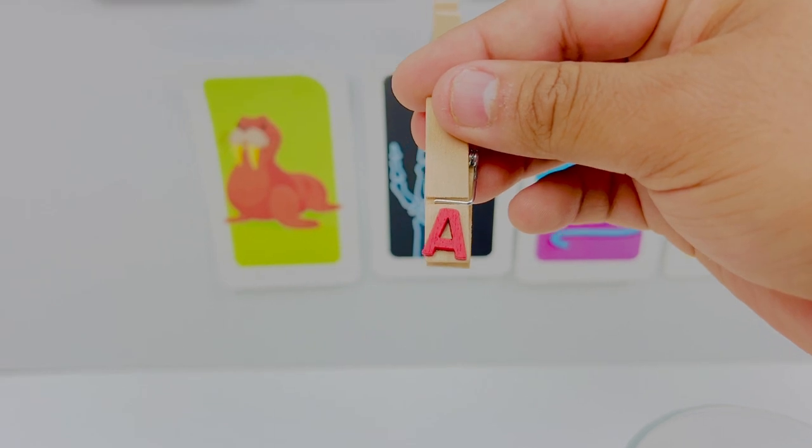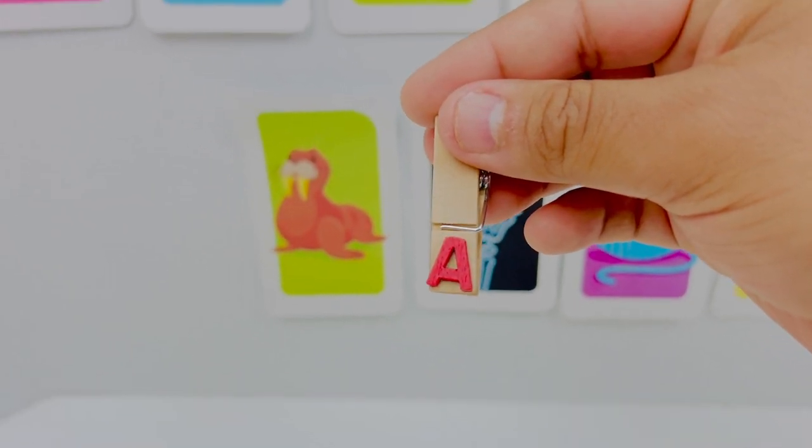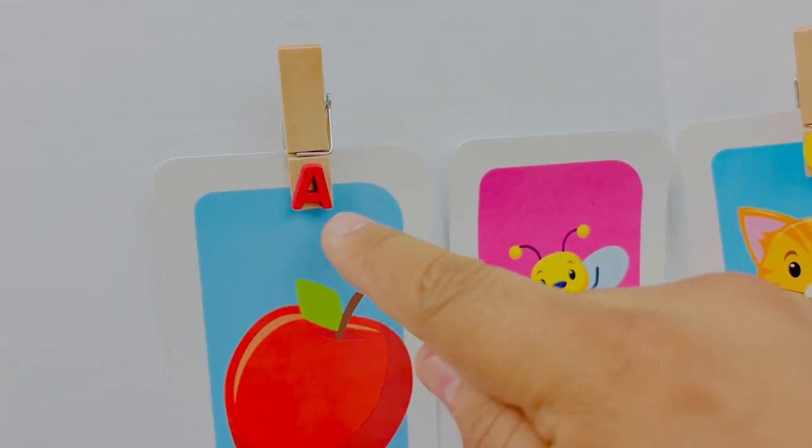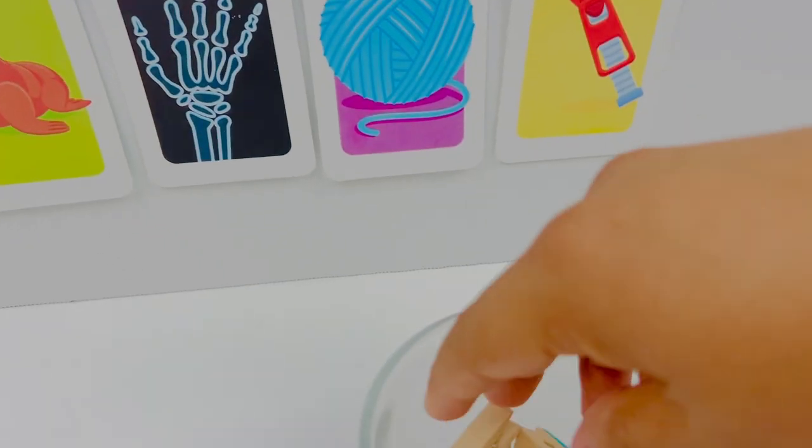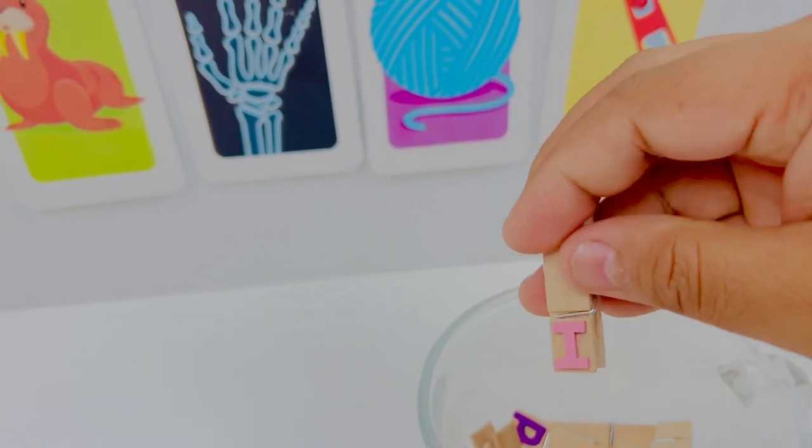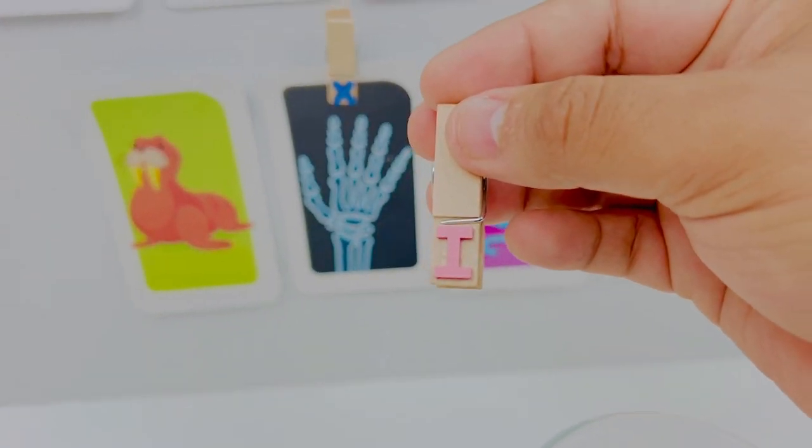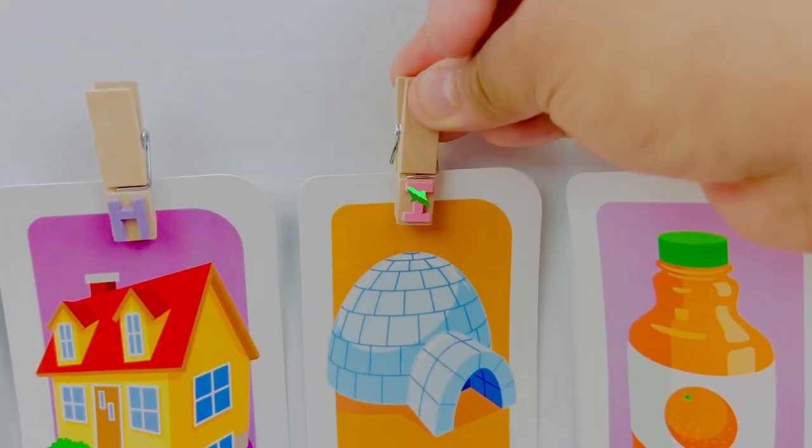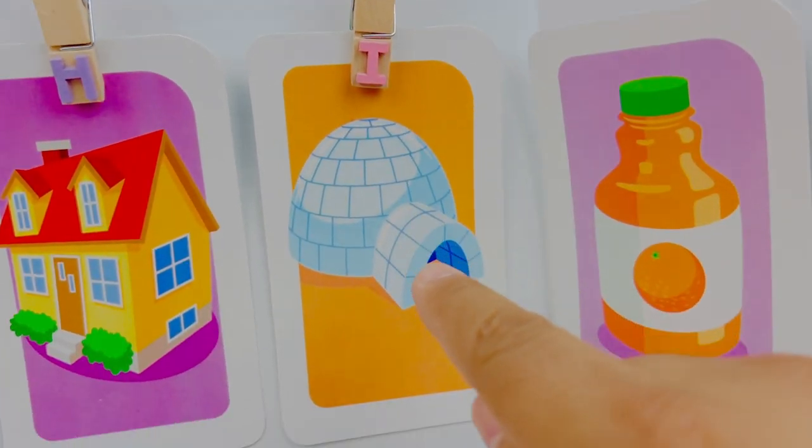This is letter A. Letter A is for apple. A apple. This is letter I. Letter I is for igloo. I igloo.